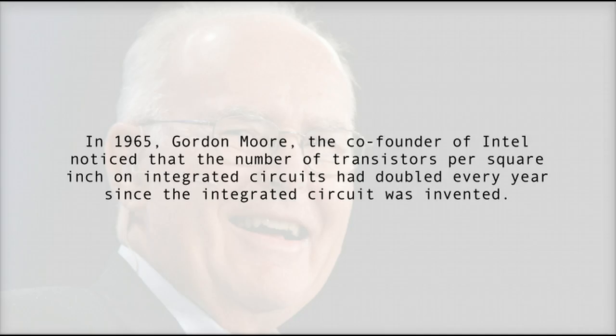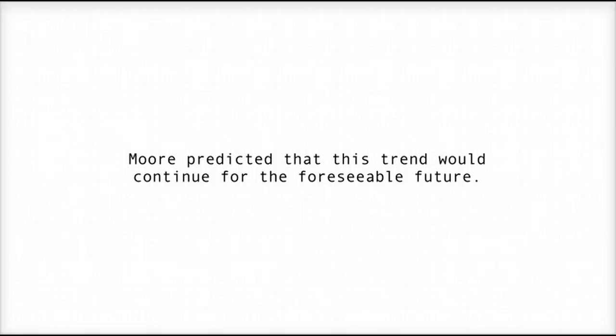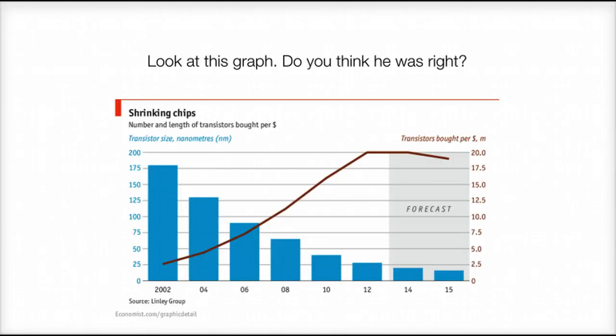It all narrows down to something called Moore's Law. In 1965, Gordon Moore, the co-founder of Intel, noticed that the number of transistors per square inch on integrated circuits had doubled every year since the integrated circuit was invented. Moore predicted that this trend would continue for the foreseeable future. Look at this graph — do you think he was right?